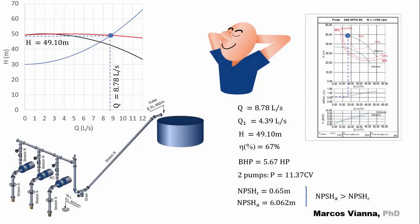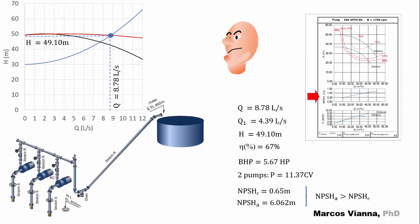In our last video, we saw how to evaluate the available NPSH of a pumping installation, so that we could compare it to the pump required NPSH and check if there was any possibility of cavitation. But it ended with a question: there are cases in which we still don't have the pump chart. We'll still run preliminary studies, but it's important to know if elevations are okay. Can we estimate the required NPSH value?